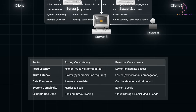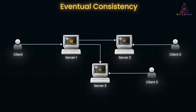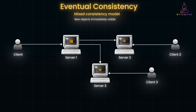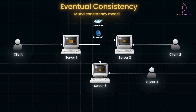Here is a side-by-side comparison of the key differences — please take a moment to pause and check it out. Most modern storage systems don't strictly follow one consistency model; instead, they allow developers to choose different levels of consistency based on their needs. For example, Amazon S3 follows a mixed consistency model: new objects are immediately visible, but updates and deletes may take some time to propagate. Similarly, databases like Cassandra and DynamoDB allow you to tune the consistency level per operation, letting you decide whether to prioritize accuracy or speed.